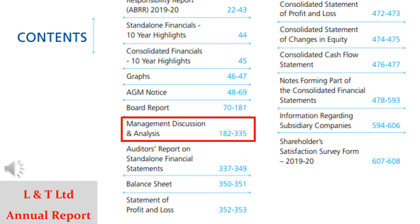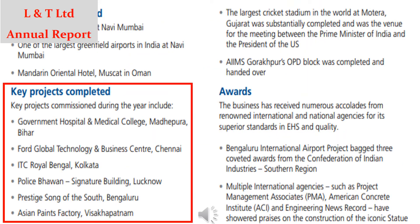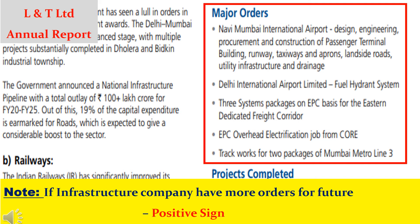For qualitative analysis, the very important chapter to check in the annual report is 'Management Discussion and Analysis.' From this chapter, we can easily understand the company's strategy and future projects — and thereby understand the company's capability. In L&T Limited's annual report, this chapter is on page 182. Under this topic, they mention current projects like a government hospital and medical college in Bihar. Under the topic 'Major Orders,' we can find future projects such as international airport construction. If an infrastructure company has many future projects in hand, that is a positive sign.